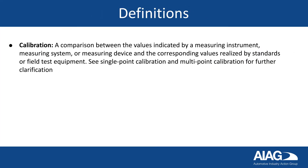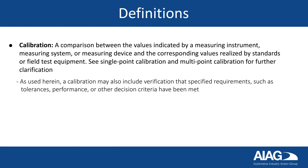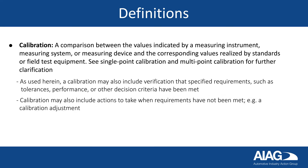A calibration is a comparison between the values indicated by a measuring instrument, measuring system, or measuring device, and the corresponding values realized by standards or field test equipment. A calibration may also include verification that specified requirements, such as tolerances, performance, or other decision criteria, have been met. Calibration may also include actions to take when requirements have not been met, like a calibration adjustment.